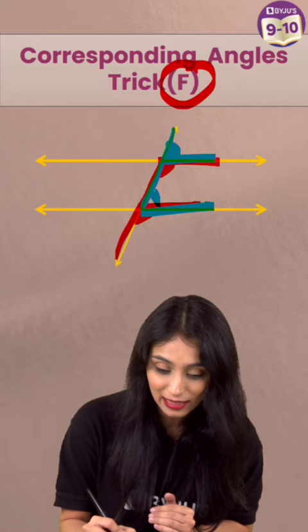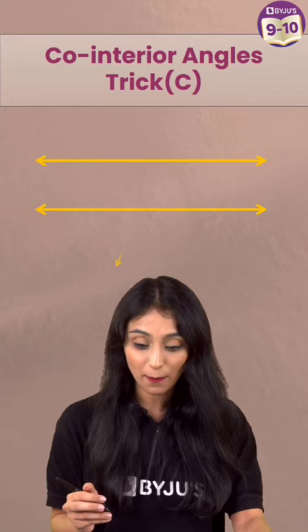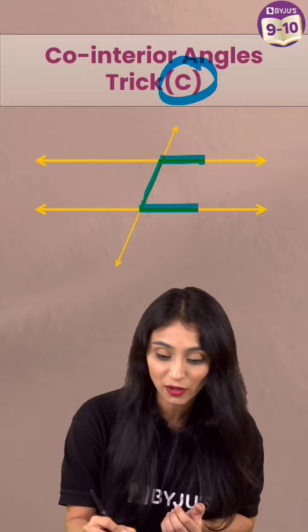Then we talk about the co-interior angles trick. To yahan par aapko dikhega ki ek c form ho raha hai. To ye bhi transversal ki ek hi side par hoga, is tarah se c ban raha hai, aur ye andar wale dono angles ka sum milakar hoga 180 degrees, similarly on the other side as well.